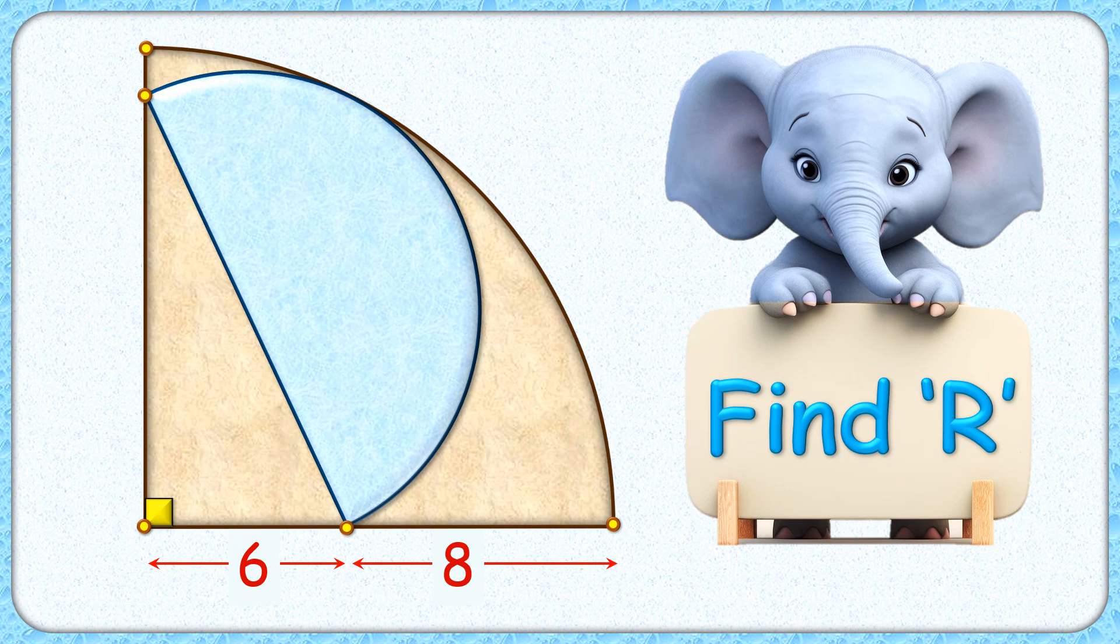Welcome to this interesting question where we have a quadrant with radius 14 cm with a semi-circle inside it. The exciting part is with this limited data we have to find the radius of this semi-circle.